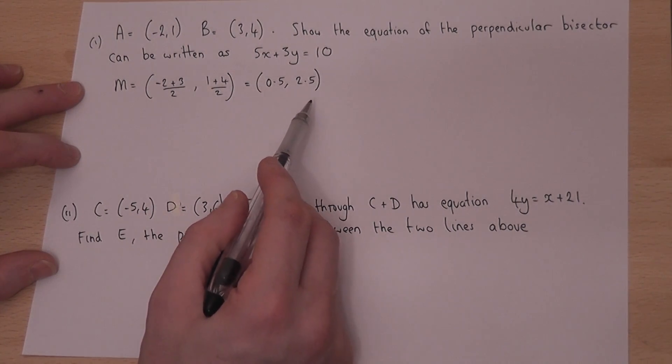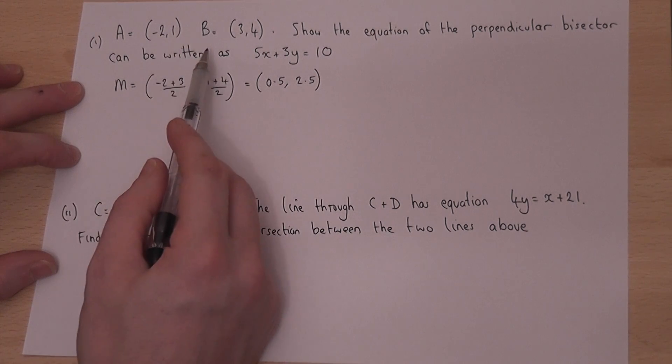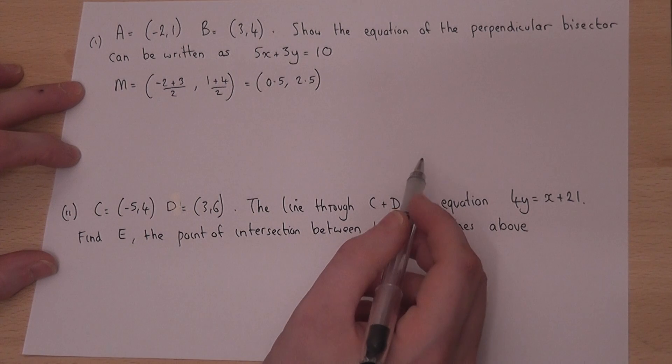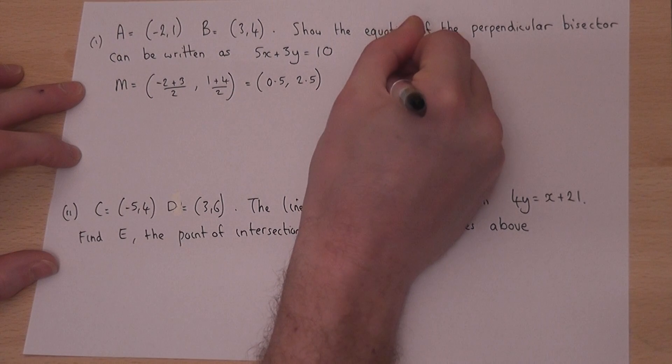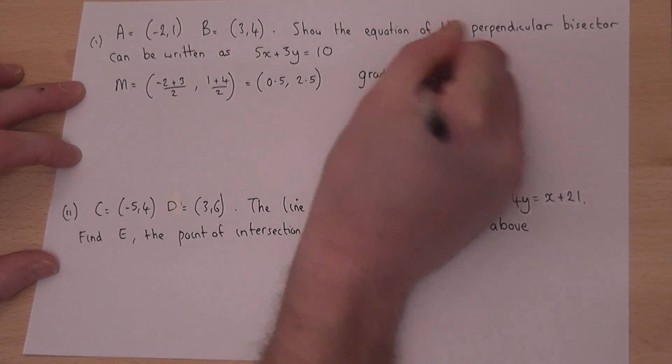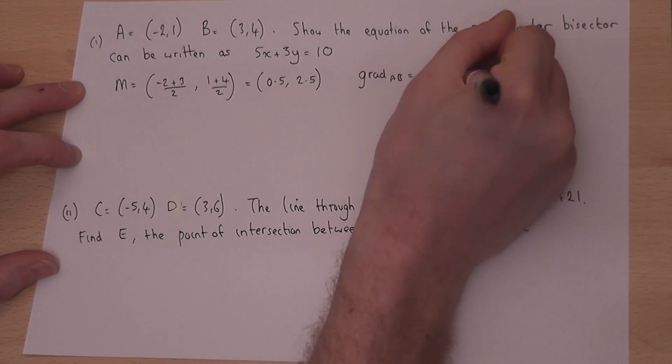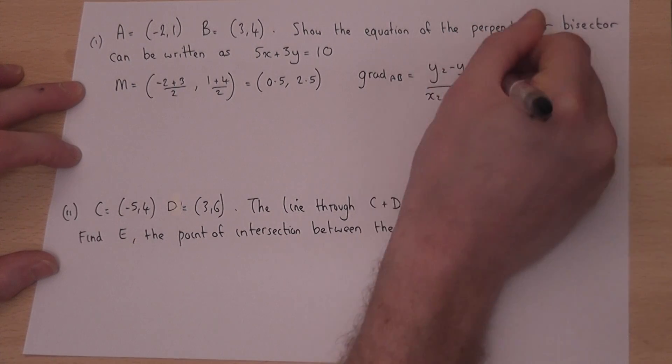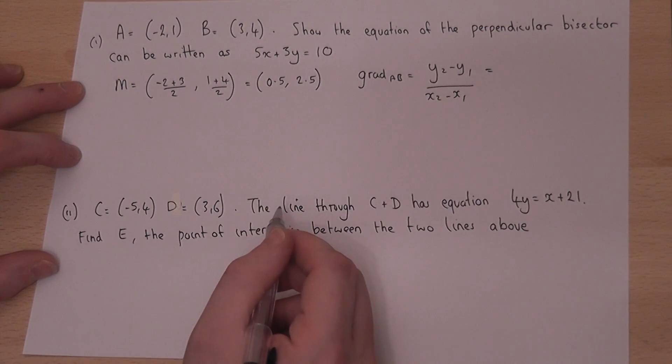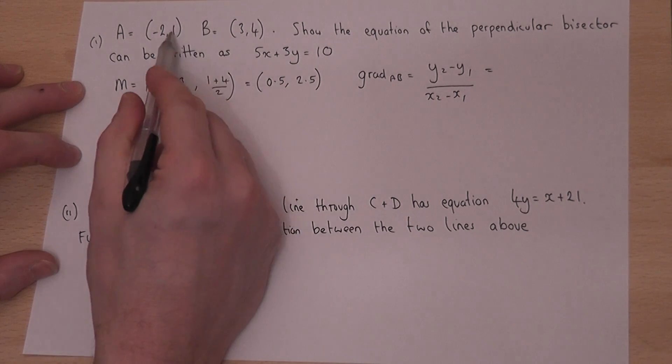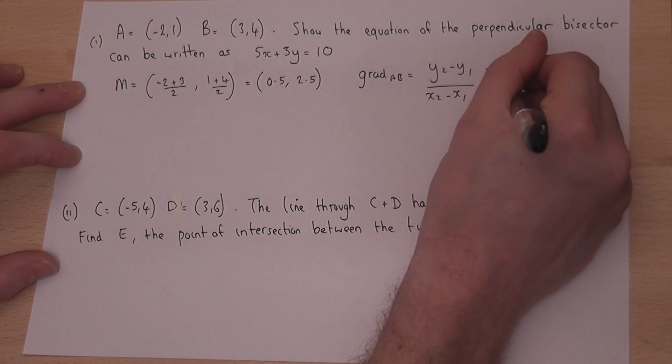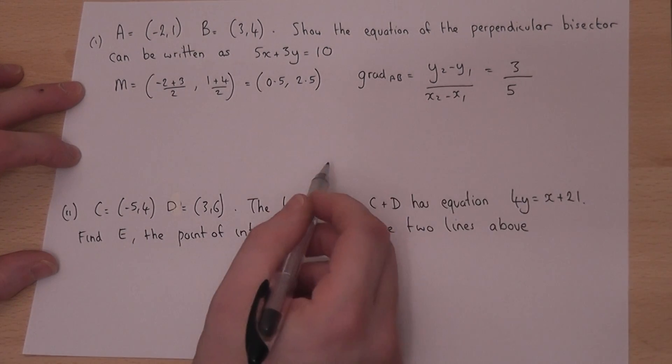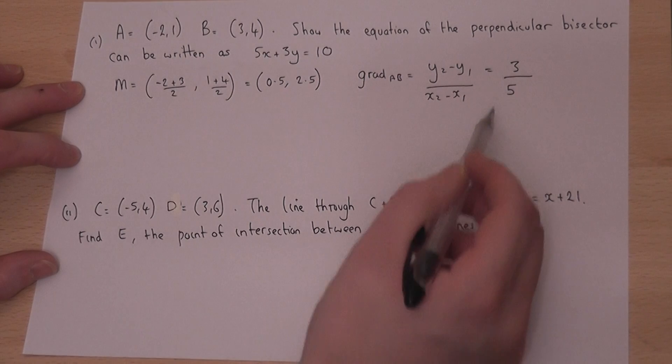Now, it passes through the middle of the two coordinates and it also is at right angles. So if I find the gradient between A and B by using y2 minus y1 over x2 minus x1, then 4 take away 1 is 3, 3 take away minus 2 is 5. So the gradient between A and B is 3 fifths.